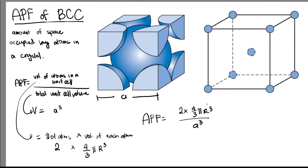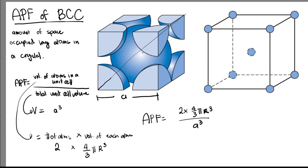To get our APF, we need to solve this. What we can do is express A in terms of R. Since we know that for BCC, the body diagonal — this one here — is where our atoms are touching, we can get a relationship for the lattice parameter A and the radius of our atoms.